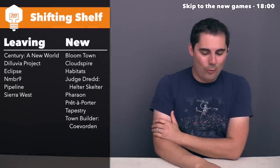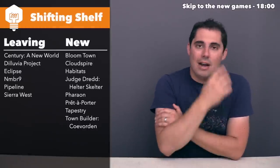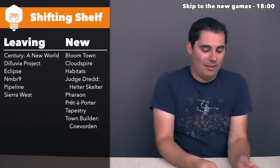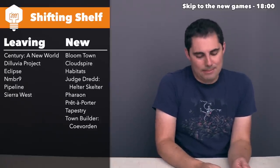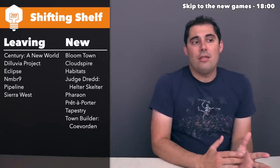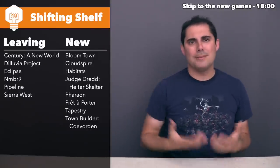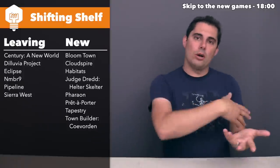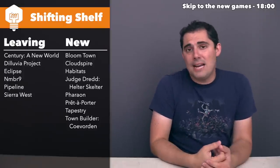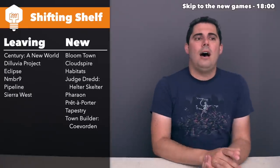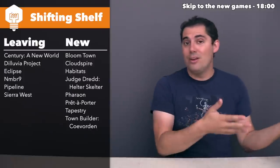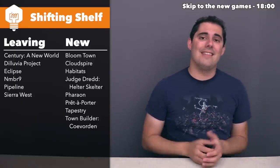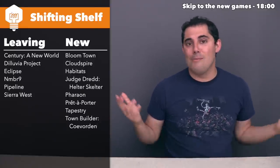Let's move on to the shifting shelf, where I talk about games I pulled off my shelf and games coming in. Starting with what's going out — in alphabetical order, there are six games. The first is Century: A New World, the third and final game in the Century trilogy. It's a very light worker-bumping style worker placement game where you can go where another player went, but you send more workers and knock their worker back out. I played it a couple of times and did a tutorial and playthrough for it since it won the bonus video poll. I just didn't find it engaging, so I'm getting rid of it.